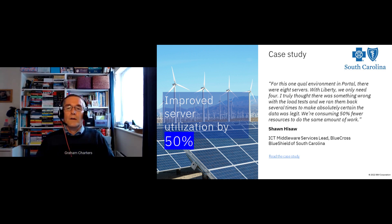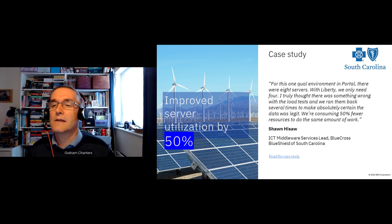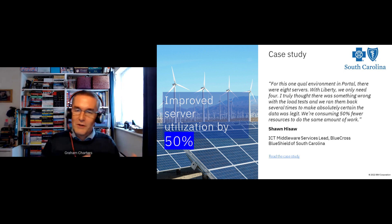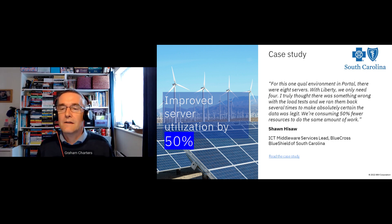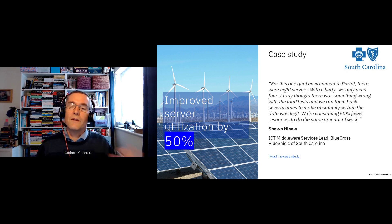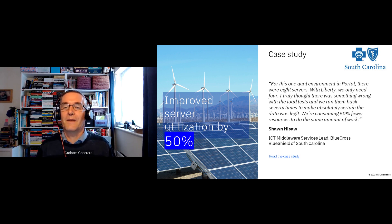Another case study on resource benefits: Blue Cross Blue Shield South Carolina — the same company mentioned earlier — migrated an application from traditional WebSphere to Liberty, both running in virtual machines. They deployed and did load testing, and found that where previously they needed eight instances of the traditional application server runtime, they only needed four instances to run the same workload. The saving was so significant they kept rerunning the tests until they were convinced the results were legitimate.